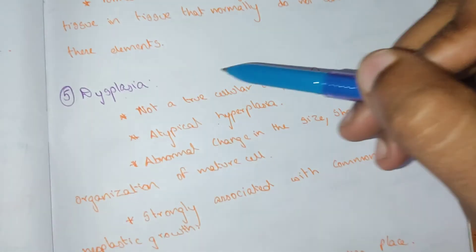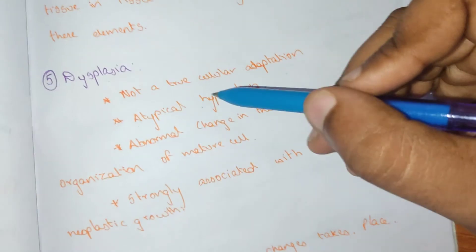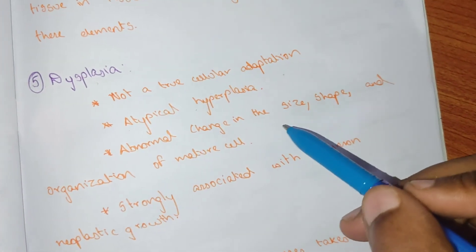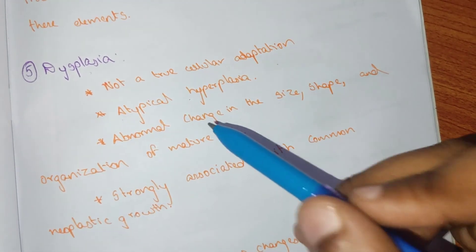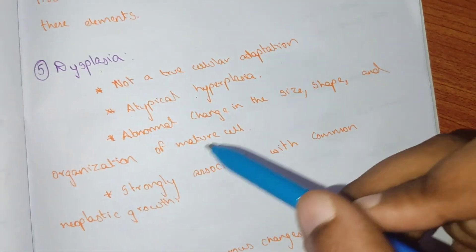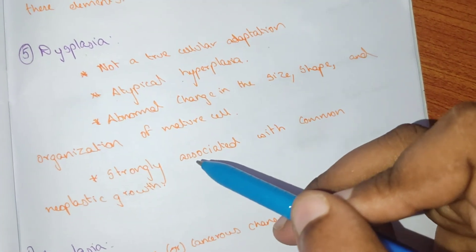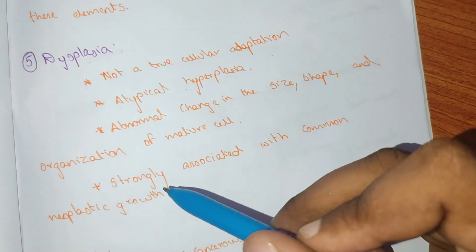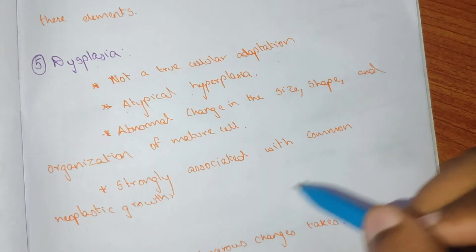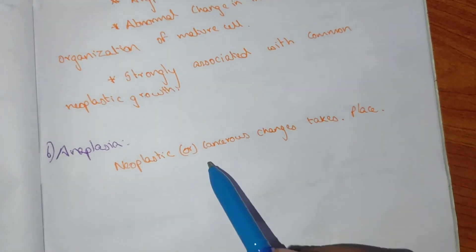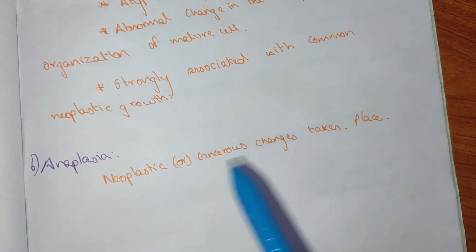Dysplasia is not a true cellular adaptation. It involves atypical hyperplasia — abnormal changes in size, shape, and organization of mature cells. It is strongly associated with neoplastic growth. Anaplasia refers to neoplastic and cancerous changes that take place in cells.